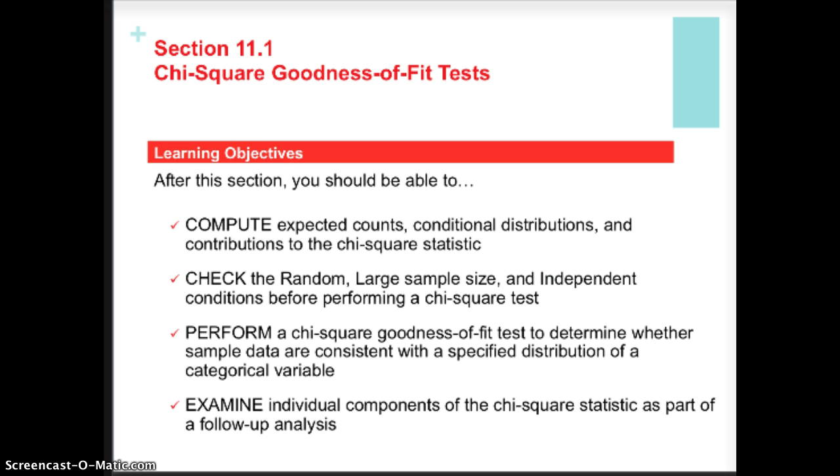Then we want to be able to actually perform the significance test, the chi-square goodness of fit test. And that is going to determine whether the sample data that we have observed is going to be consistent with the distribution of the categorical variable that was claimed or in our hypothesis.